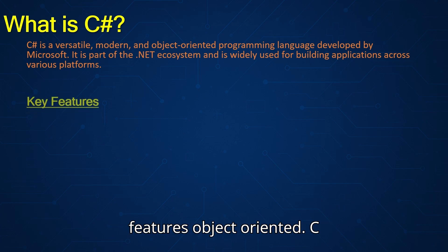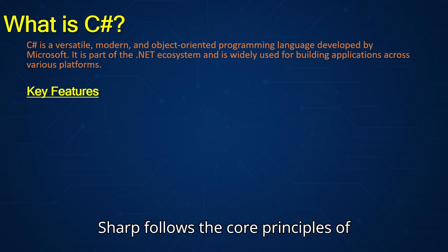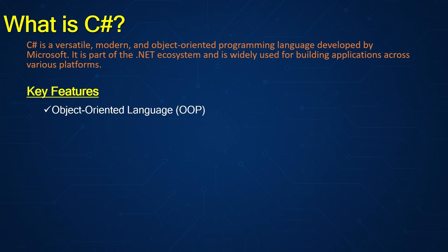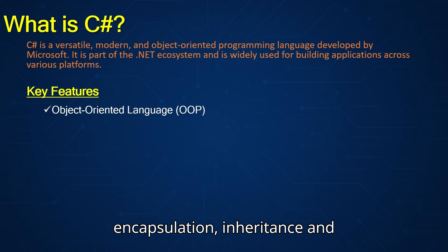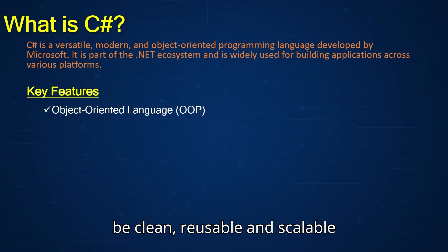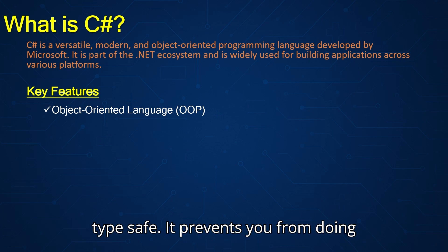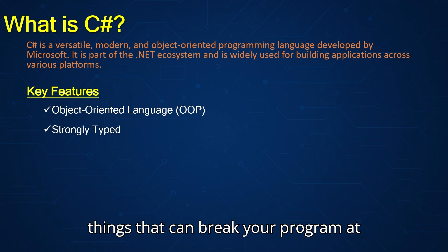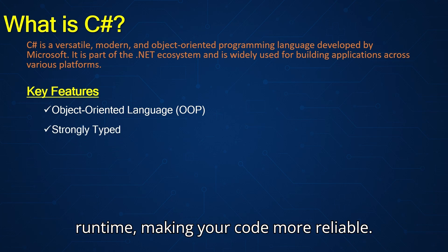C-sharp features: Object-oriented — C-sharp follows the core principles of object-oriented programming: encapsulation, inheritance, and polymorphism, which means your code can be clean, reusable, and scalable. Type-safe — it prevents you from doing things that can break your program at runtime, making your code more reliable.